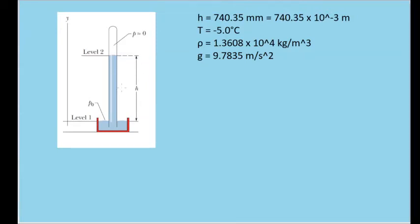We have a mercury barometer with a column of mercury that has a height h of 740.35 millimeters, or in meters, 740.35 times 10 to the negative 3 meters.